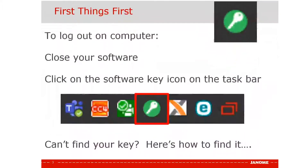To log out on your computer, close your software. Then click on the software key icon on the taskbar.